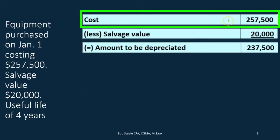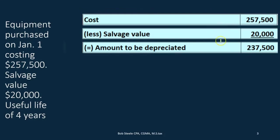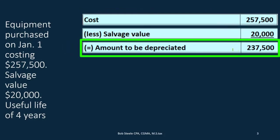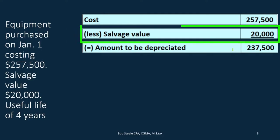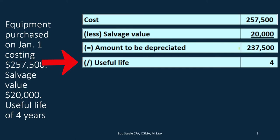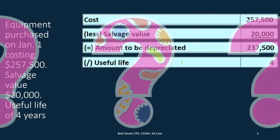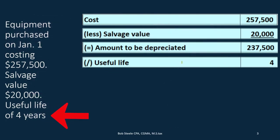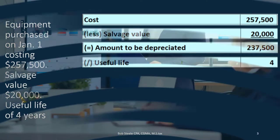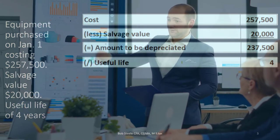So we bought it for $257,500 and we're going to put it on the books as an asset. Then we're going to depreciate it down to $20,000 over the useful life, leaving us with the salvage value at the end. Once we have the amount we want to depreciate, we're going to divide it by the useful life — four years in this case. The question that comes to mind is: how did we come up with four years? We're going to have to plan out how long we believe the equipment is going to be used for.